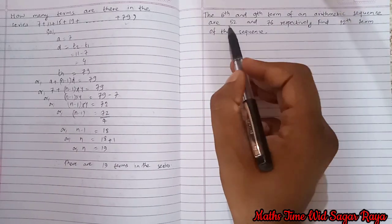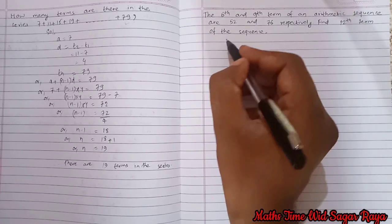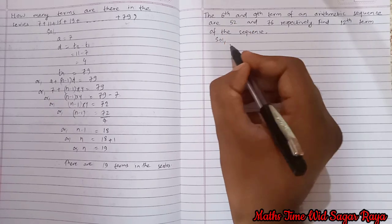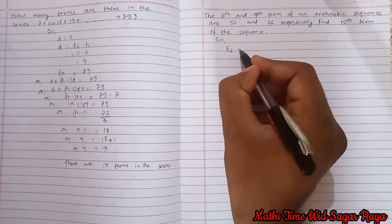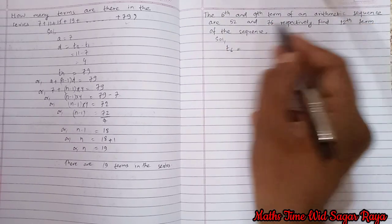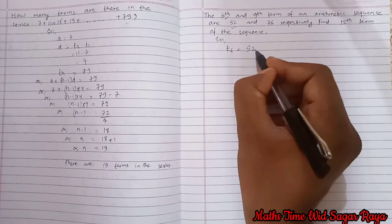Find 12th term of the sequence. So here we are given 6th term, so t6, sixth term, t6 is equal to 52.